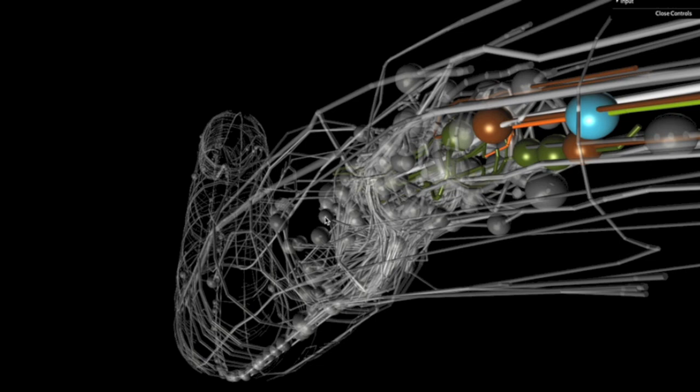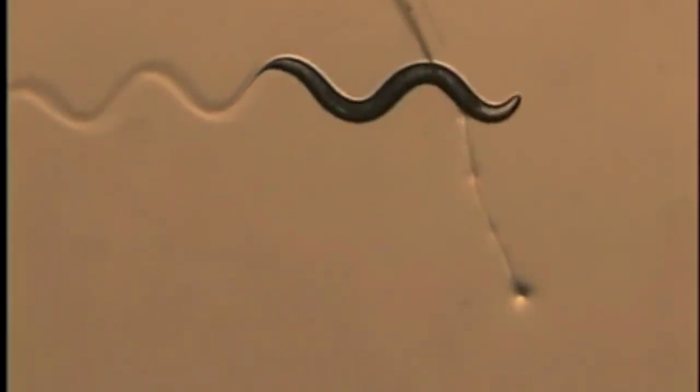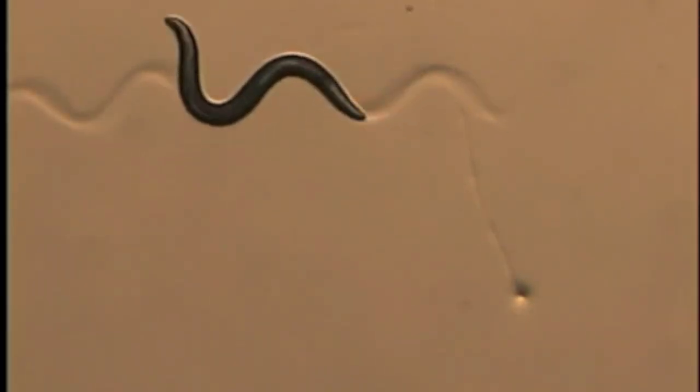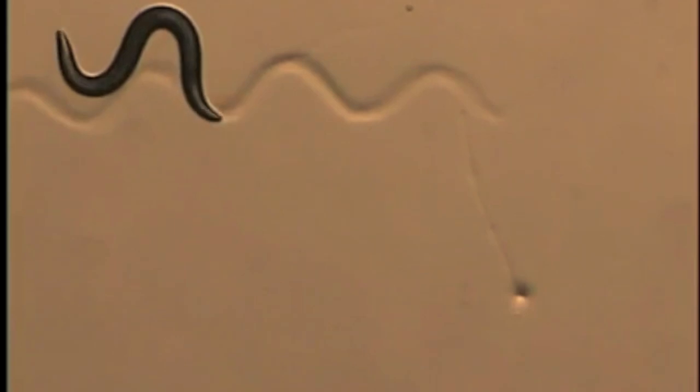Despite the relatively simple neuronal system present within C. elegans, it displays numerous complex and primitive behaviors. Primitive behaviors include feeding, locomotion, and reproduction.